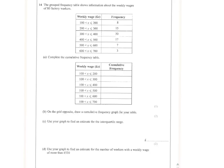A fairly standard cumulative frequency diagram question about the weekly wages of 80 factory workers. The frequency table tells us how many factory workers are between certain intervals. So we know that 15 factory workers are between 200 and 300 pounds.